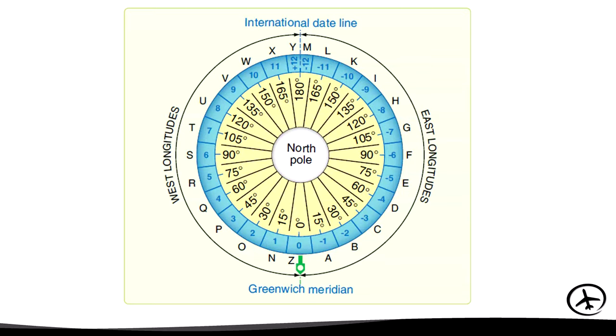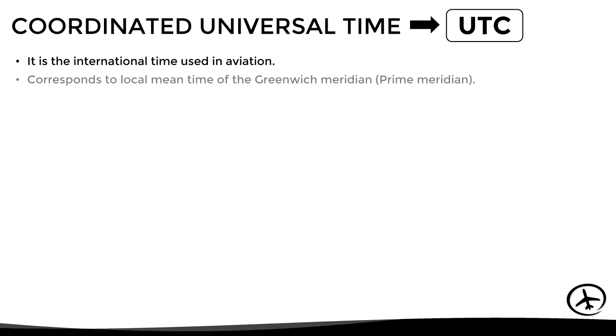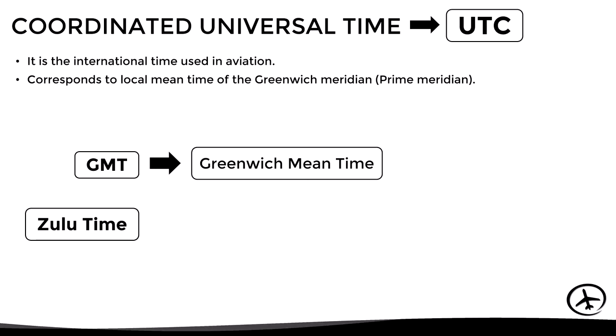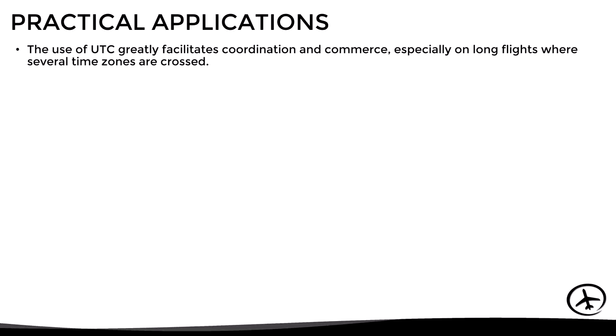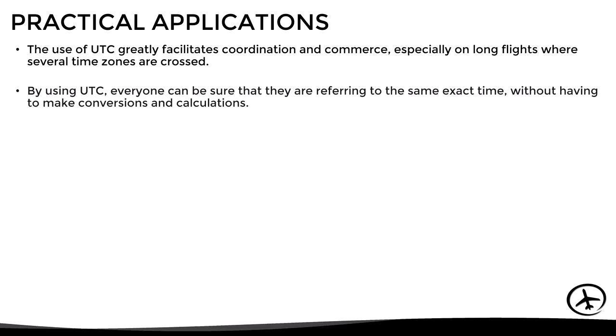Let's now talk about the coordinated universal time, abbreviated as UTC. This is the international time used as a reference in air operations, and it corresponds to the local mean time of the prime meridian. Other names for UTC are GMT, which stands for Greenwich Mean Time, and Zulu time, which represents time zone Z. In practice they all refer to the same time and can be used interchangeably. The use of UTC greatly facilitates coordination and commerce, especially on long flights where several time zones are crossed.